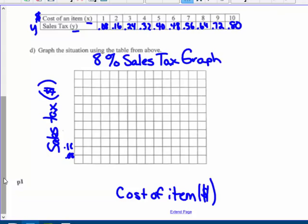Labeling the Y-axis: 0, 8, 16, 24, 32, 40, 48, 56, 64, 72, and 80 cents. For cost, I've got to get to 10, so I can only count by ones: 1, 2, 3, 4, and so on. If you go to the dollar store locally, it costs a dollar and 8 cents. I'm going to plot my points: 1 dollar gives me 8 cents tax, 2 is 16, 3 is 24, 4 is 32, 5 is 40, 6 is 48, 7 is 56, 8 is 64, 9 is 72, and 10 is 80.